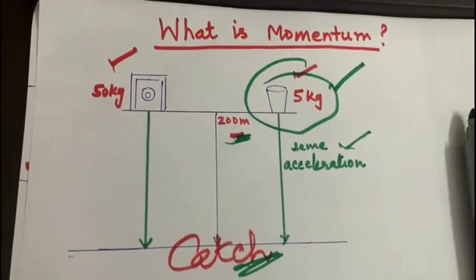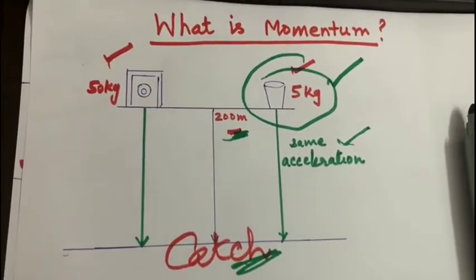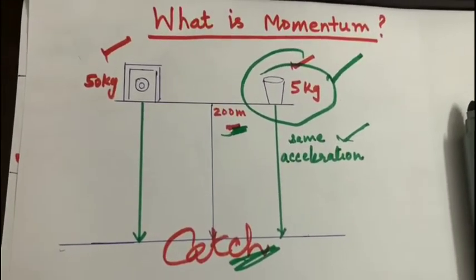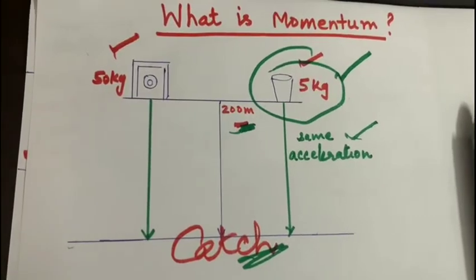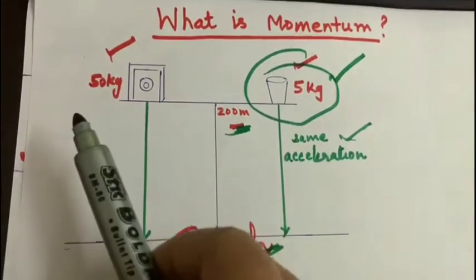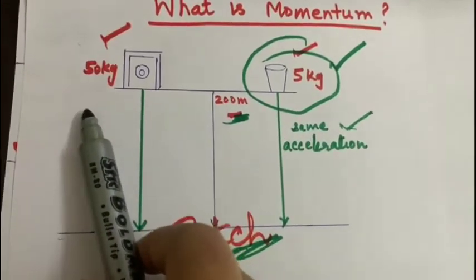But in physics, it is not the correct reason. It is because the momentum of the 5 kg body is less than the momentum of the 50 kg body.